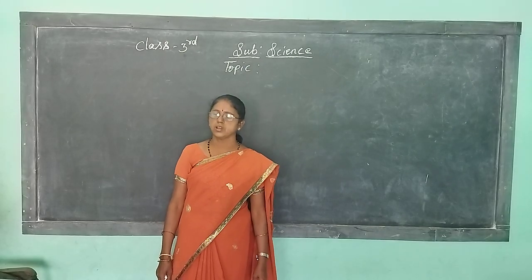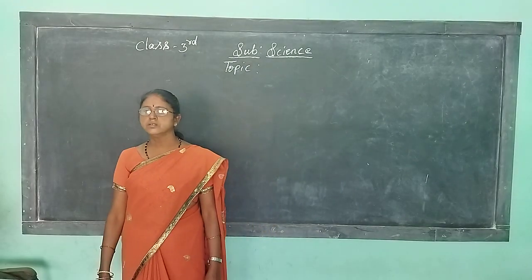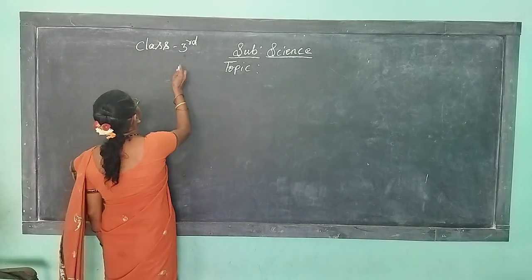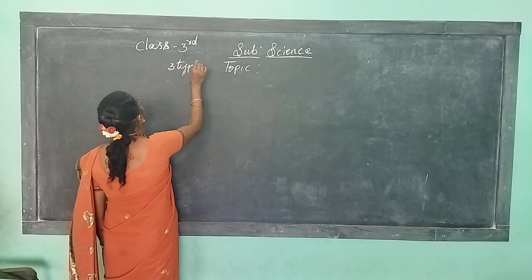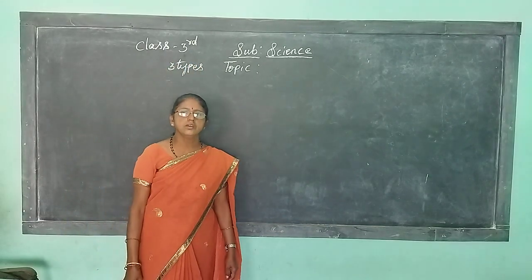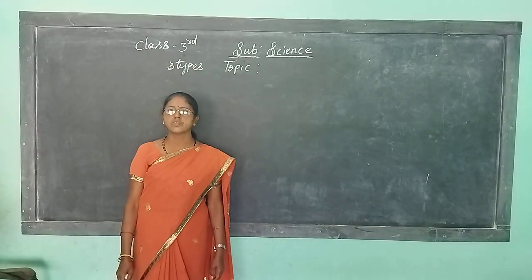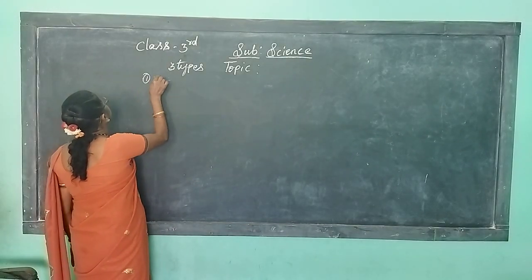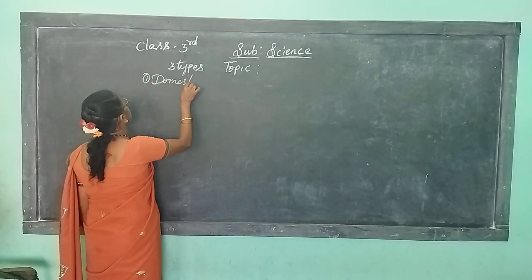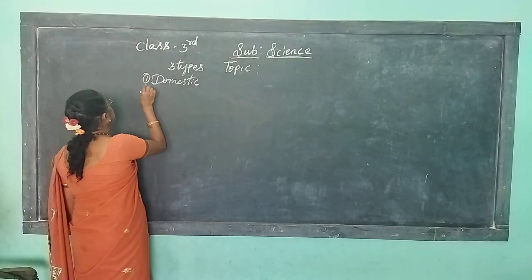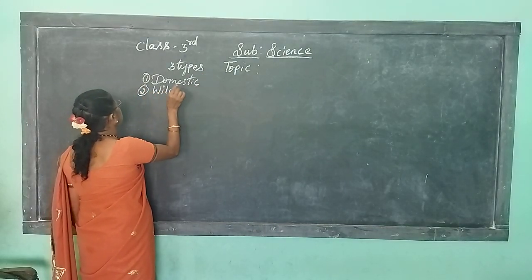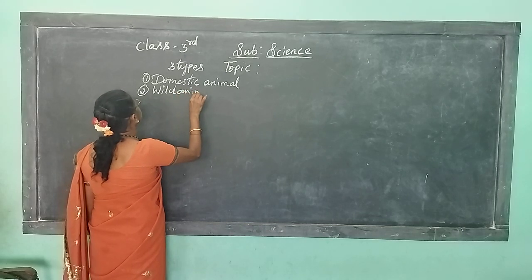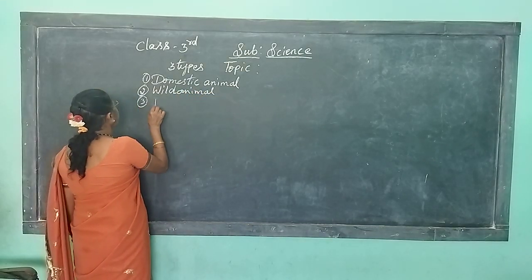How many types of animals are there, children? In the last class I explained to you. There are three types. Which are they? First one is domestic animal. Second one is wild animal. And third is pet animal.